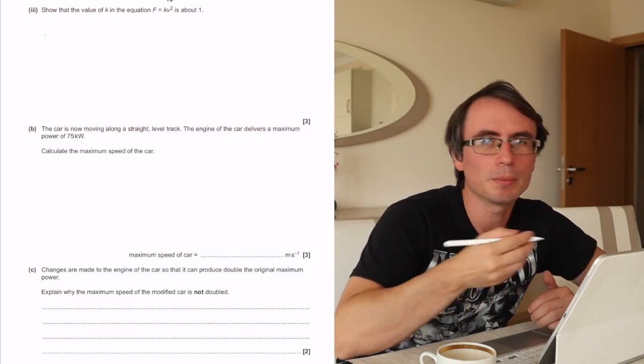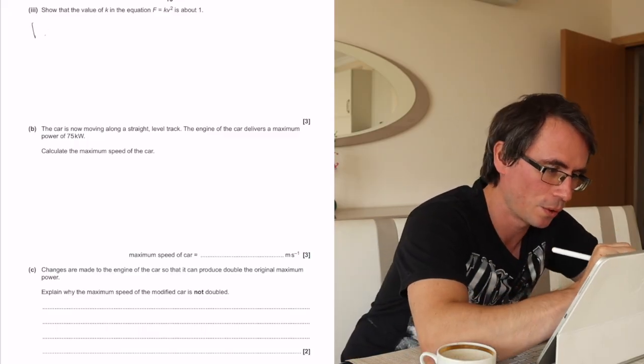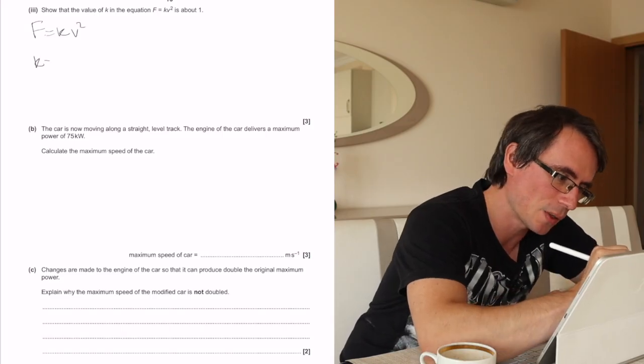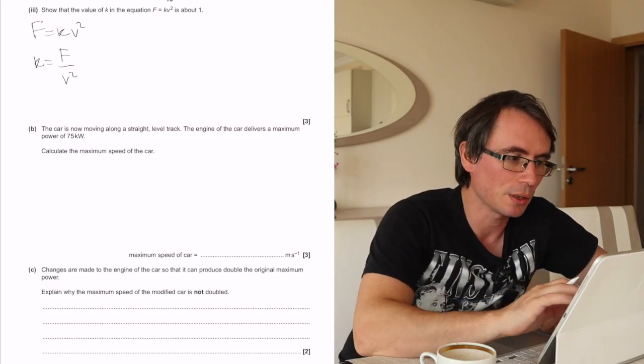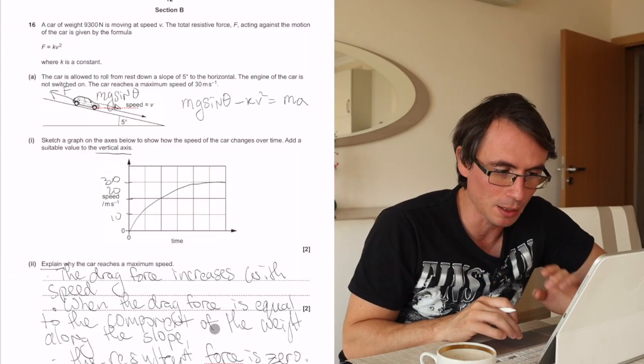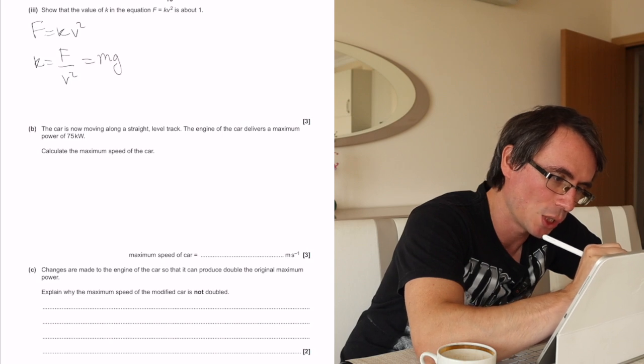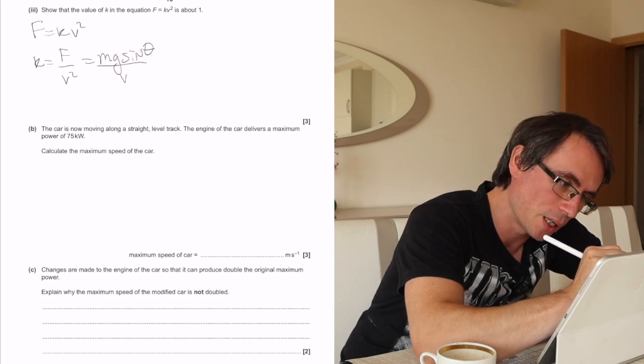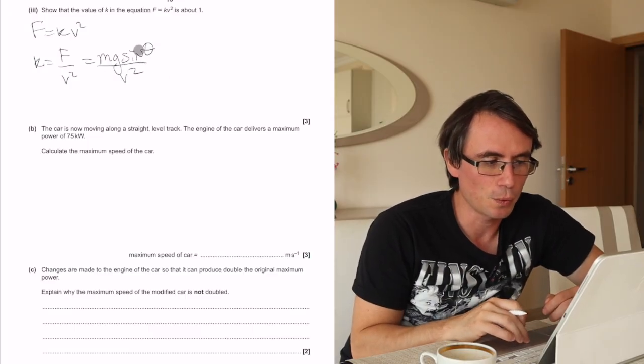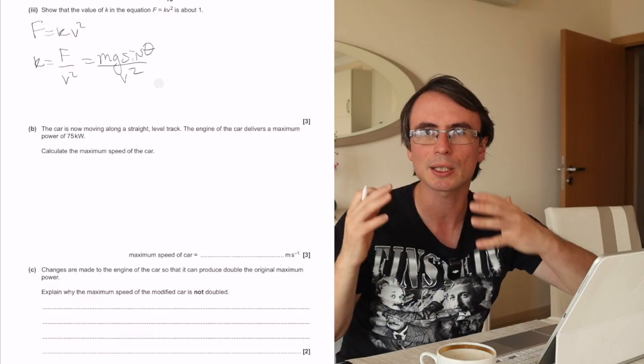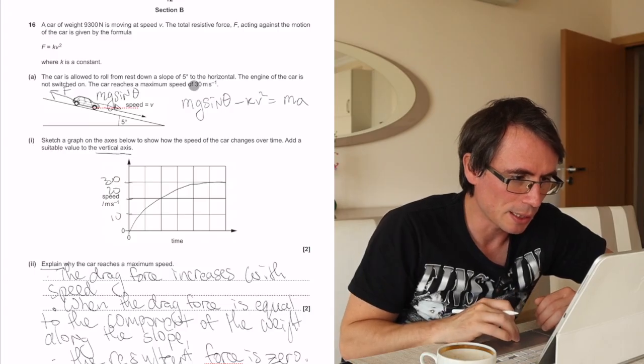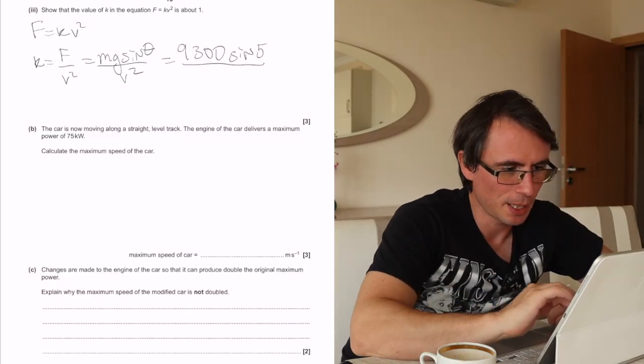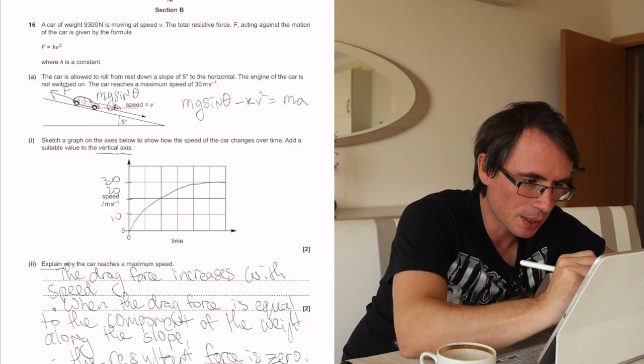What we probably want to do is pick that equation and rearrange it for k. The equation was f equals kv squared, so k is going to be f over v squared. In this question, the force was equal to the component of the weight along the slope, which was mg sine theta divided by v squared. Notice how I have written down the actual formulas. I've not substituted numbers. I like to substitute numbers right at the end. This is really helpful for A-level physics. We're actually given the weight 9,300, and the slope is 5 degrees.